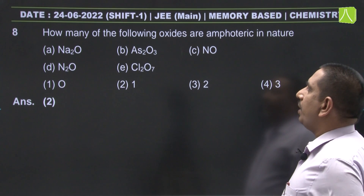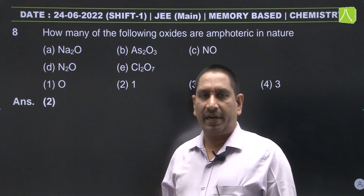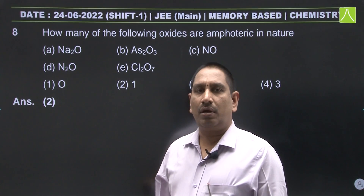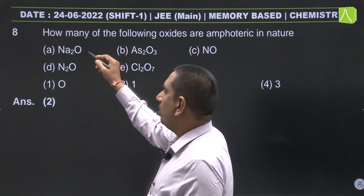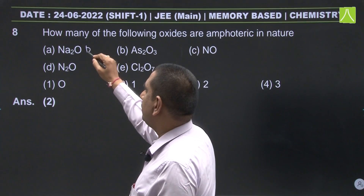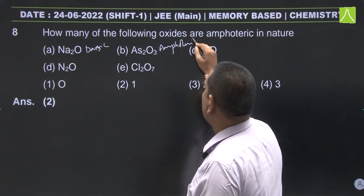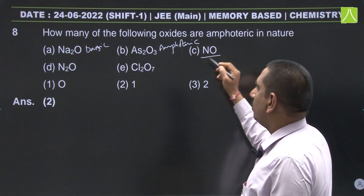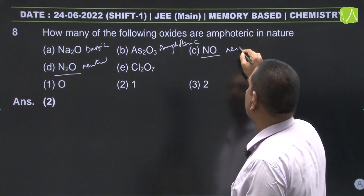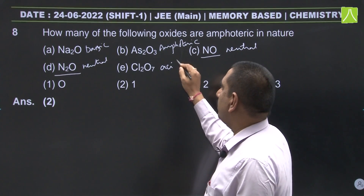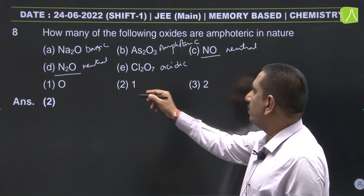How many of the following oxides are amphoteric in nature? Metal oxides are basic, non-metal oxides are acidic, and metalloid oxides are amphoteric. Sodium oxide is a metal oxide so it is basic. Arsenic oxide is amphoteric. Nitric oxide and nitrous oxide are neutral oxides. Cl2O7 is an acidic oxide. So the number of amphoteric oxides is only one — arsenic oxide.